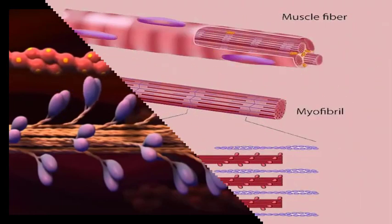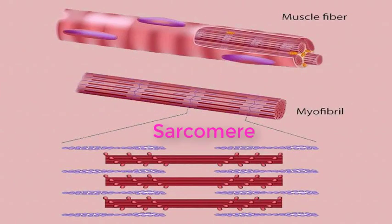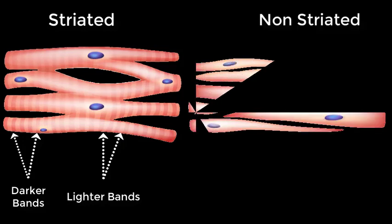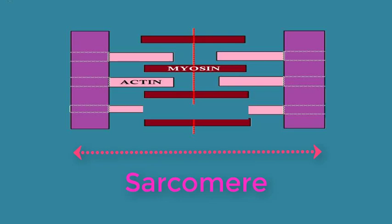Actin and myosin form thin and thick filaments respectively, which slide past each other to contract small units of a muscle cell called sarcomeres. Many sarcomeres run end to end within a larger fiber called a myofibril. Hence, a muscle cell is a compact bundle of many myofibrils that can either be striated — meaning it appears striped with darker and light sections under a microscope — or non-striated. The basic unit of a striated muscle is a sarcomere comprised of actin, which forms the light bands, and myosin, which forms the dark bands of filaments.